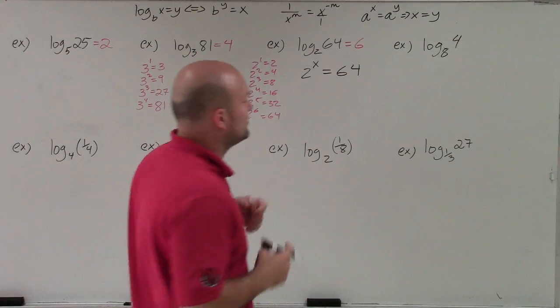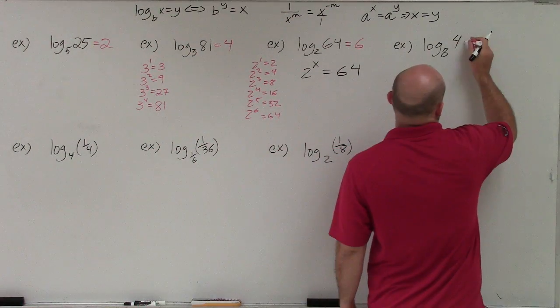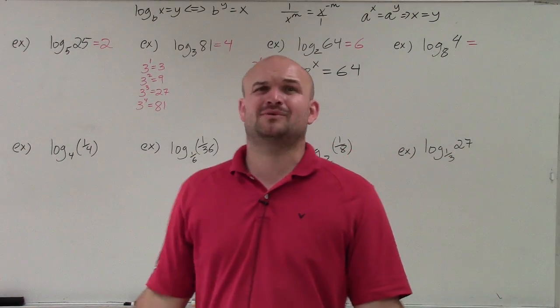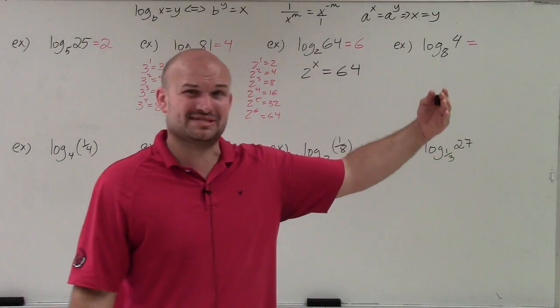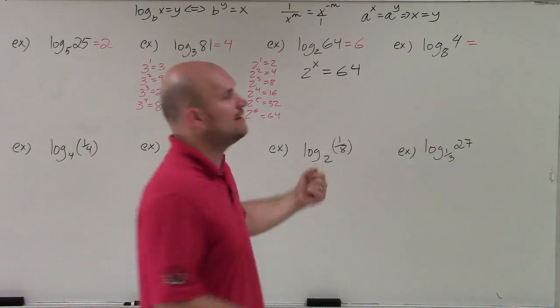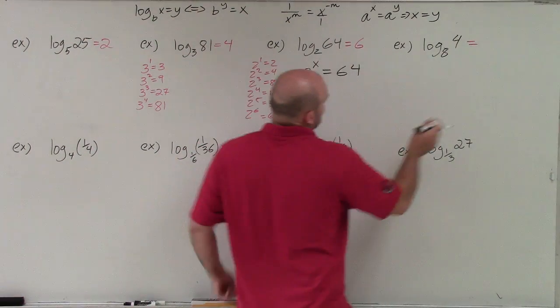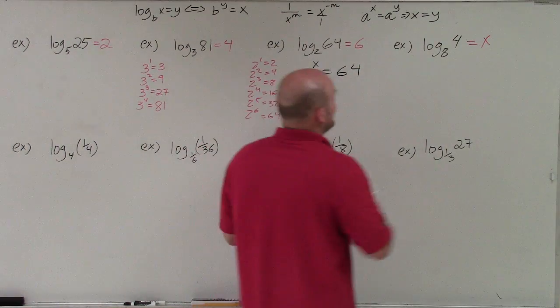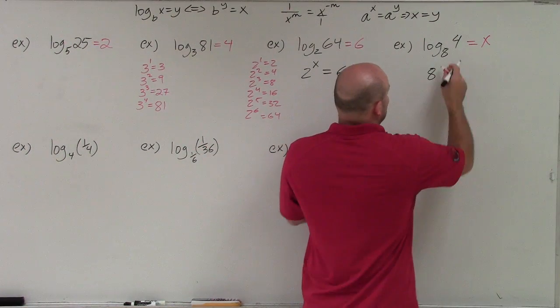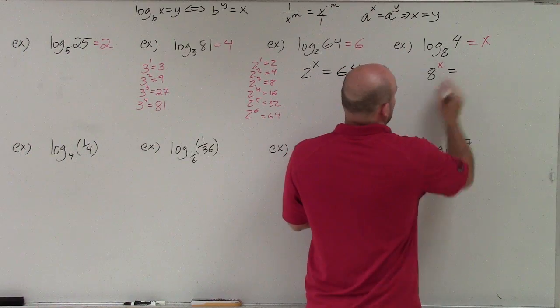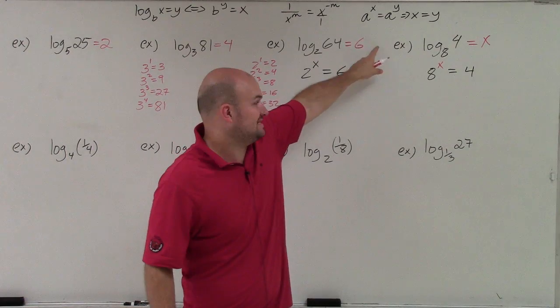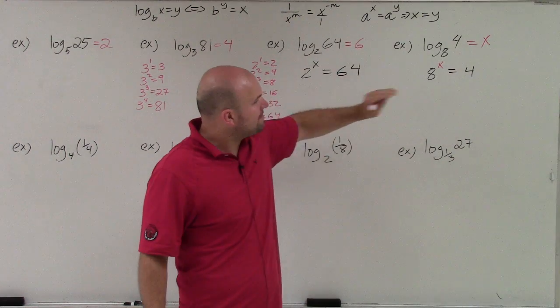Now, where that variable kind of comes in handy, though, is in a problem like this. 8 raised to what power is 4? I don't know. 8 raised to the 1st power is 8, so that's already larger than 4. So how would I do this? Again, if you kind of use the method that I did in the last one, you set it equal to x. Now, rewriting it in exponential form gives me 8 to the x equals 4. Well, now I can use this 1 to 1 property that I stated. And by using the 1 to 1 property, what I notice is 8 and 4, they have to have the same base.